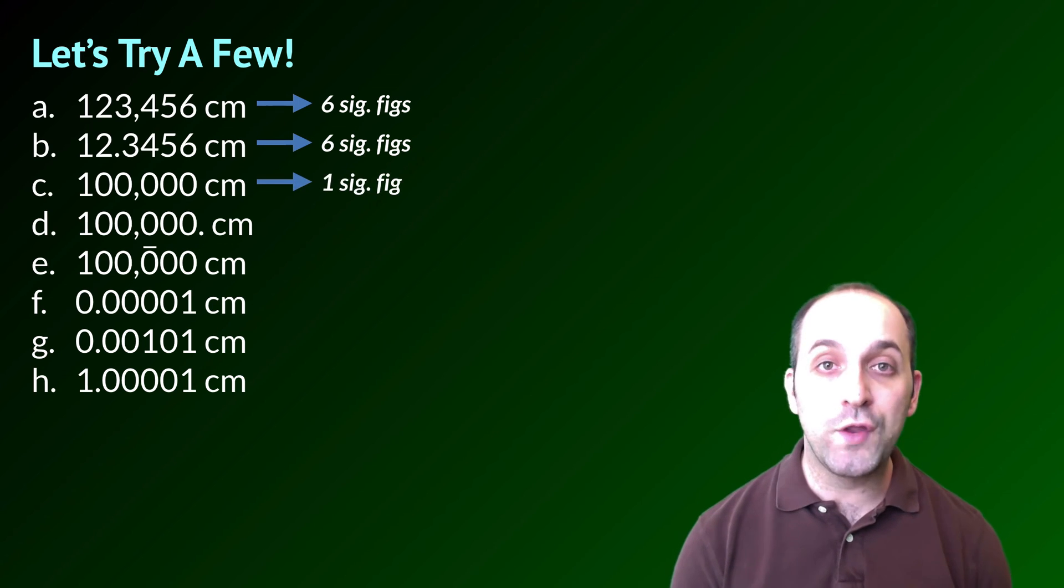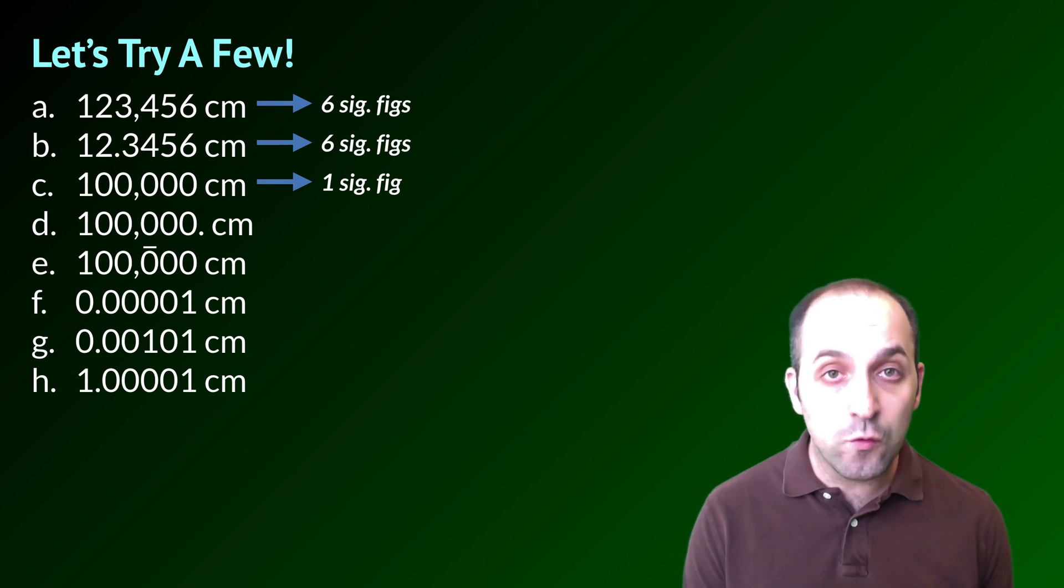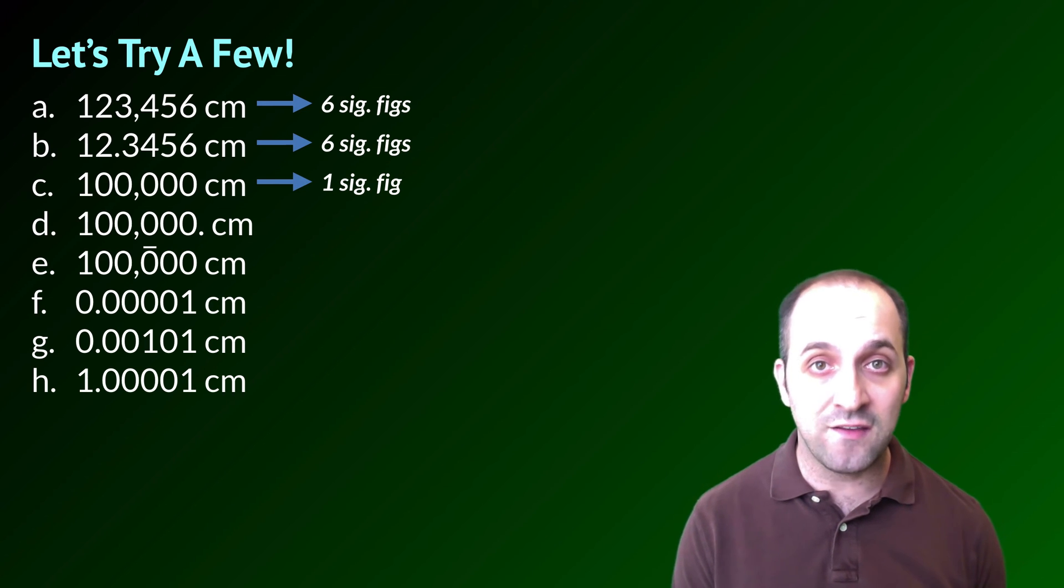In C, there is only one significant figure. It's because there's only one non-zero number in this measurement, and there's no indication that the zeros in this measurement should be counted as significant.